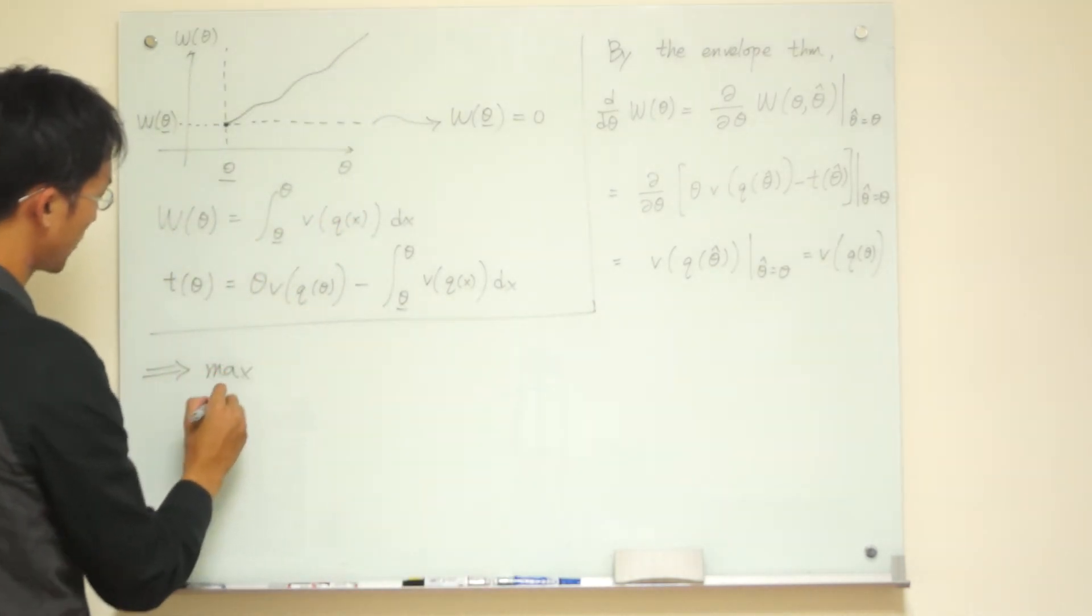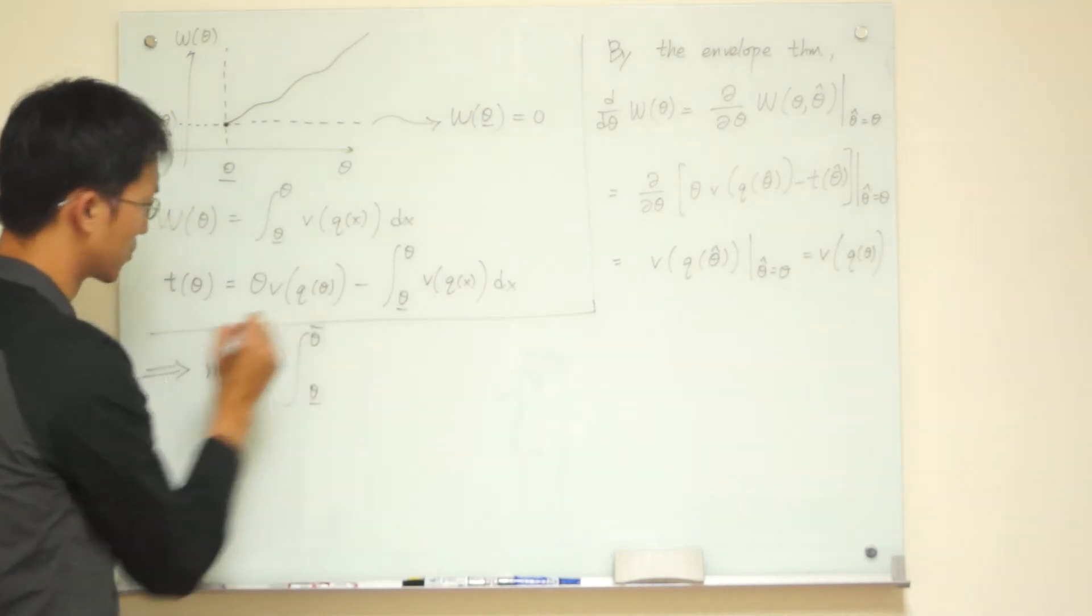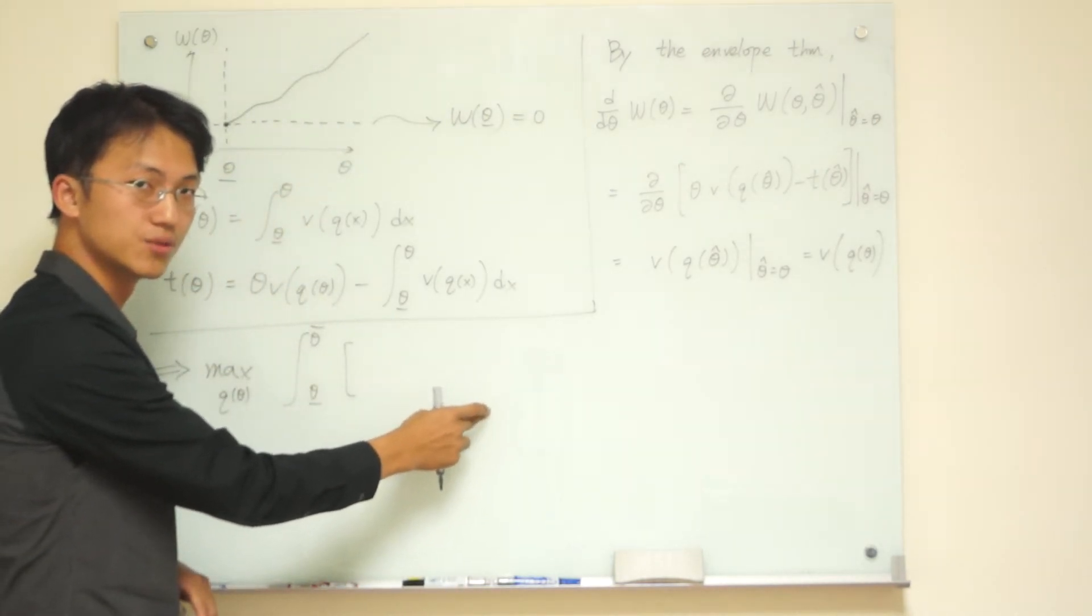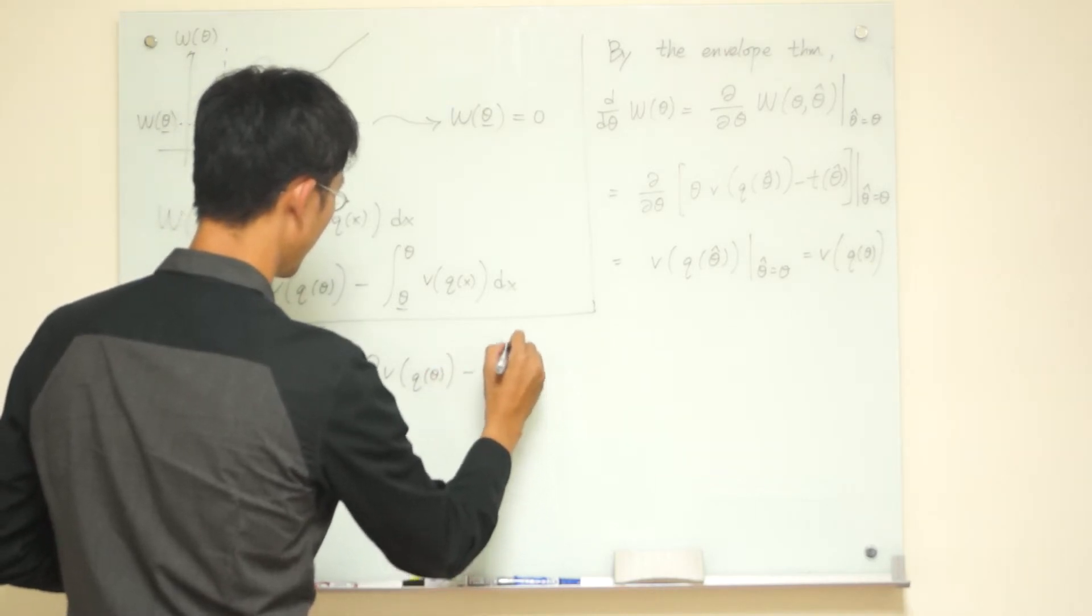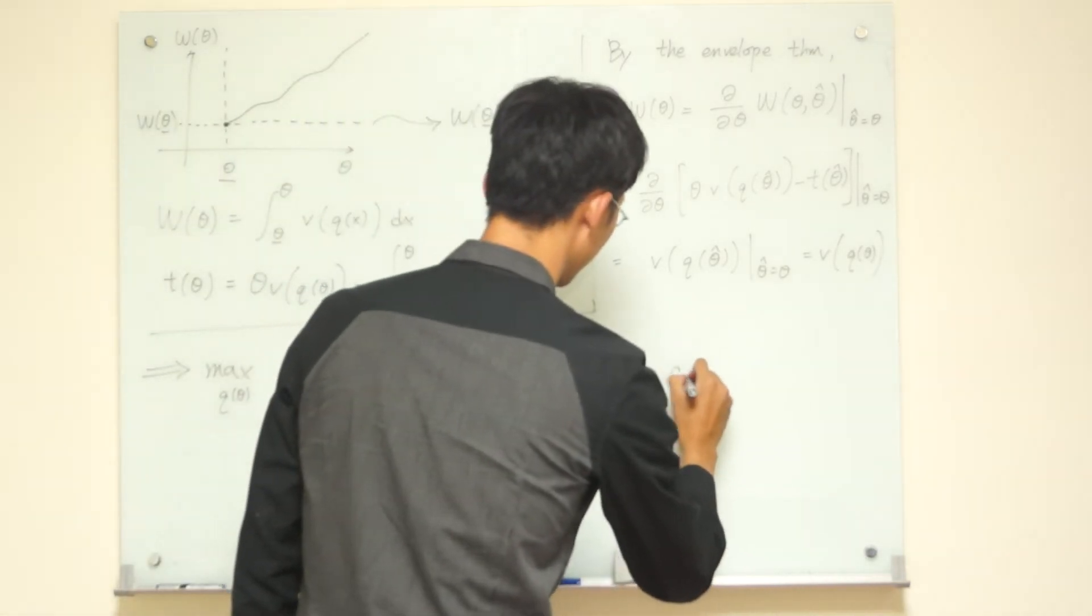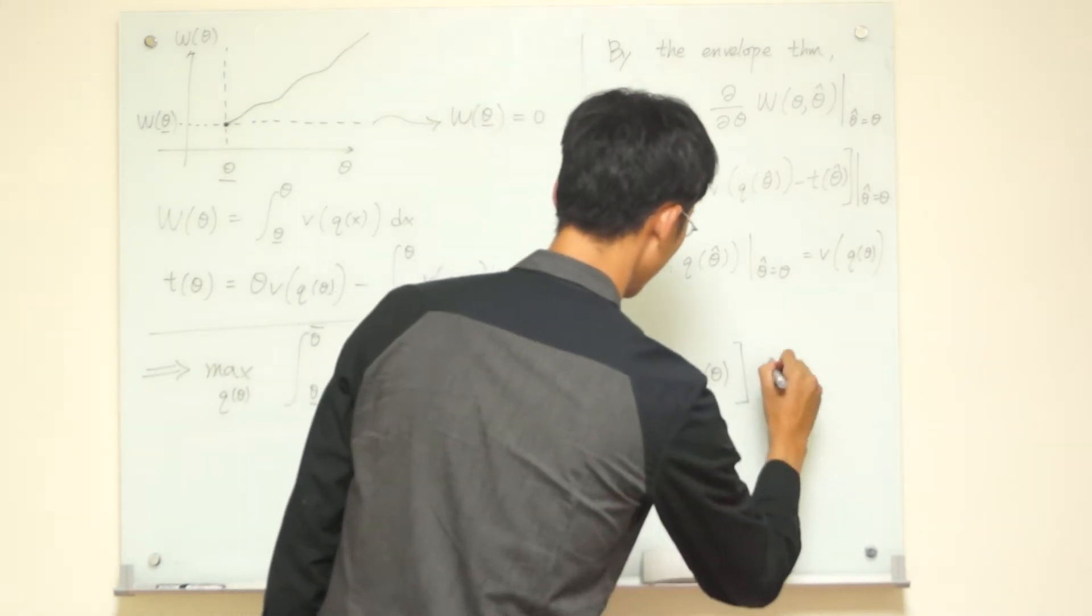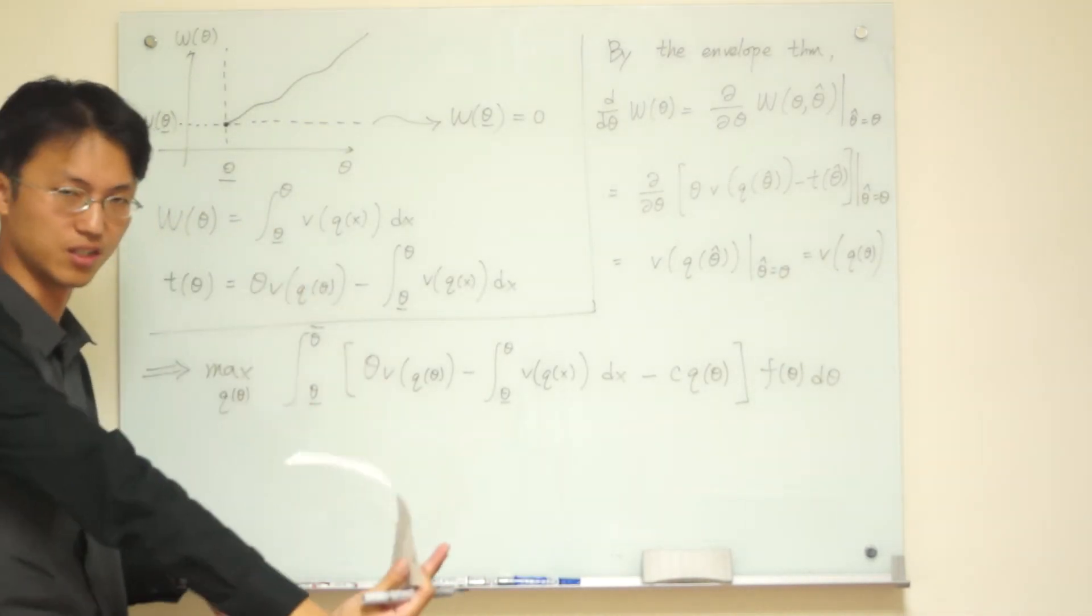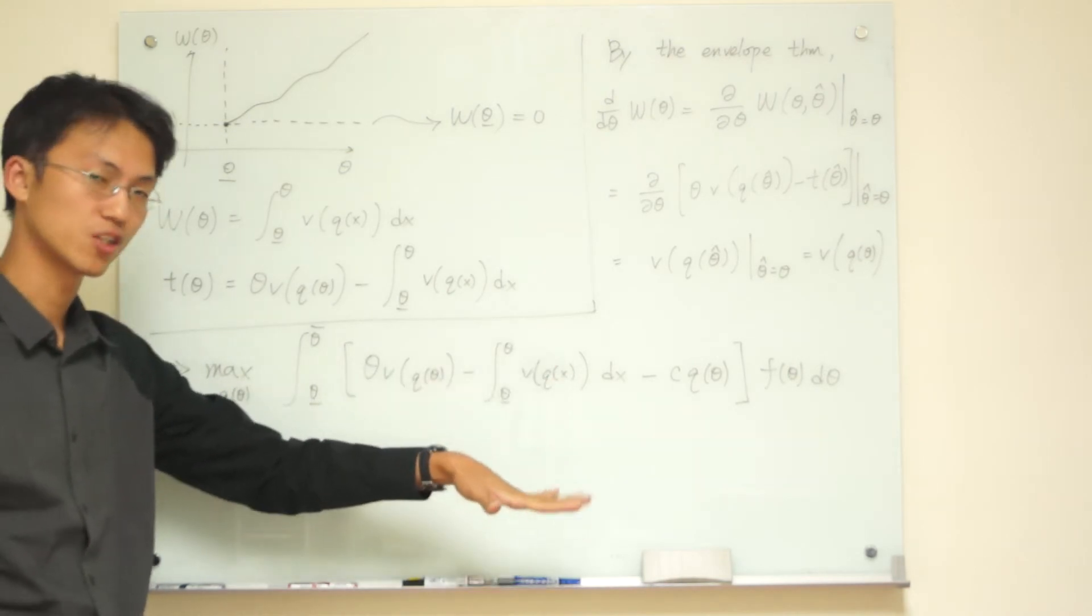So, my problem will become, I'm going to maximize something with respect to Q of theta. And then I have, remind yourself, this is T minus CQ, right? T is this guy. So T, let me write T here. This is T minus CQ theta.